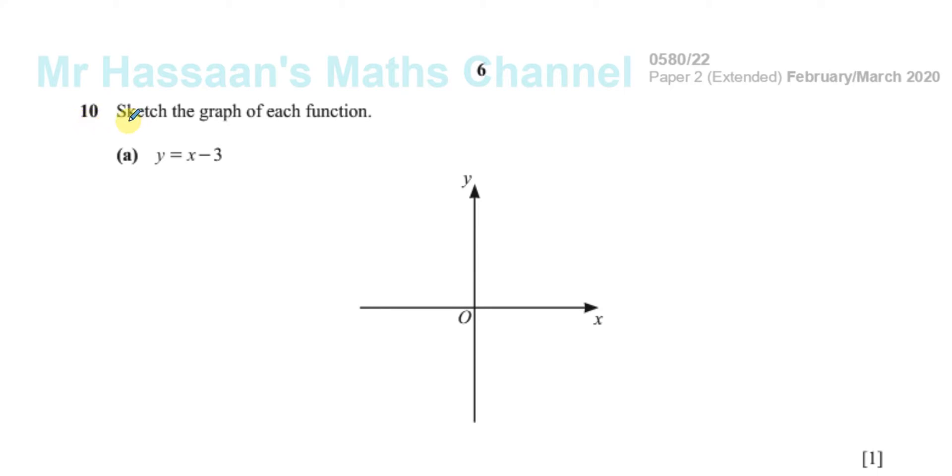Question 10 is about sketching graphs of functions. So sketch the graph of each function. Part A has the function y equals x minus 3. We should realize that because the x has a power of 1 and there's no x in the denominator, this is a linear function.